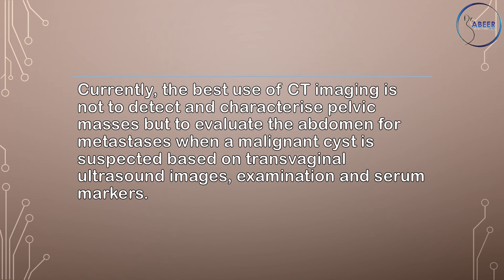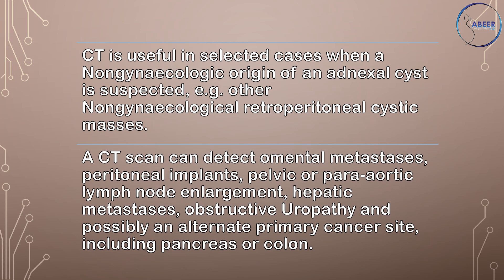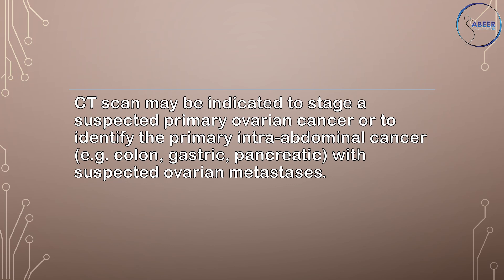Currently, the best use of CT imaging is not to detect and characterize pelvic masses but to evaluate the abdomen for metastasis when a malignant cyst is suspected based on transvaginal ultrasound, examination, and serum markers. CT is useful in selected cases when a non-gynecologic origin is suspected. A CT scan can detect omental metastasis, peritoneal implants, pelvic or para-aortic lymph node enlargement, hepatic metastasis, obstructive uropathy, and possibly an alternate primary cancer site including pancreas or colon.